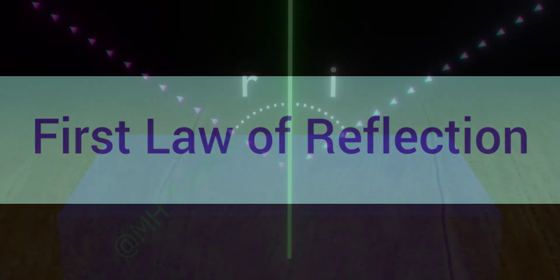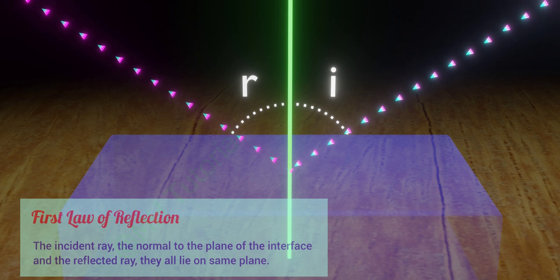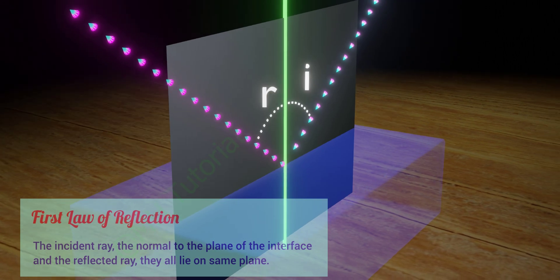Let's see the first law of reflection. It says the incident ray, the normal to the plane of the interface, and the reflected ray, they all lie on same plane.